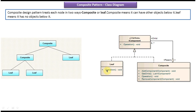On the left side you can see the leaf class. Leaf is the last and final node — it does not have any other objects below it, so it does not have methods to add or remove components. It has only the operation method. The abstract operation method from the IComponent interface is implemented by this leaf class.